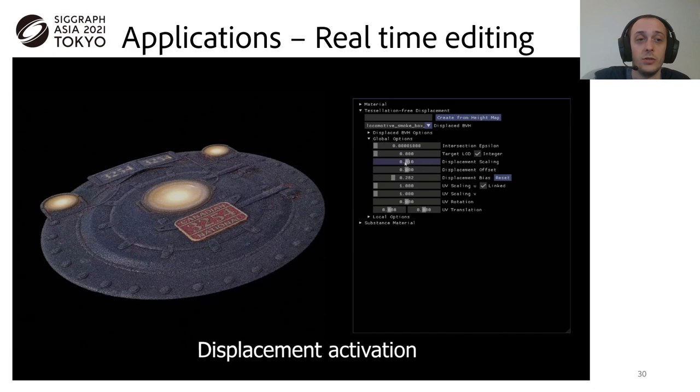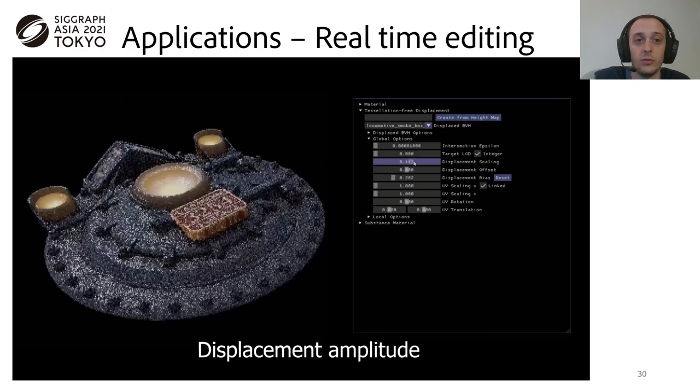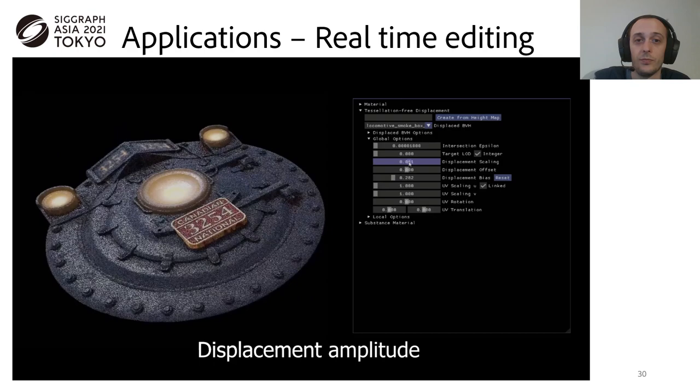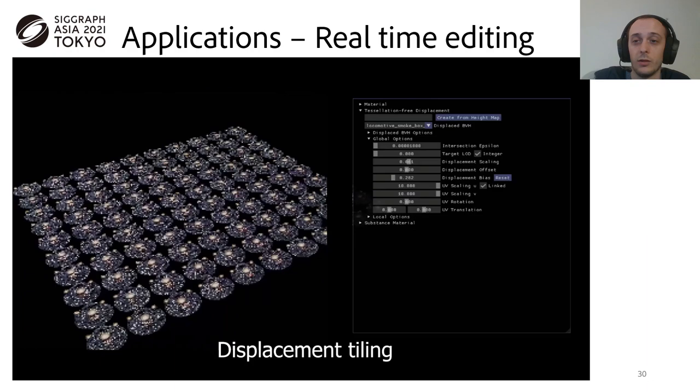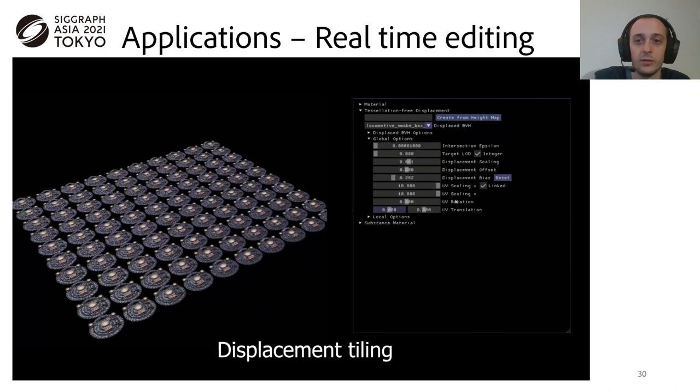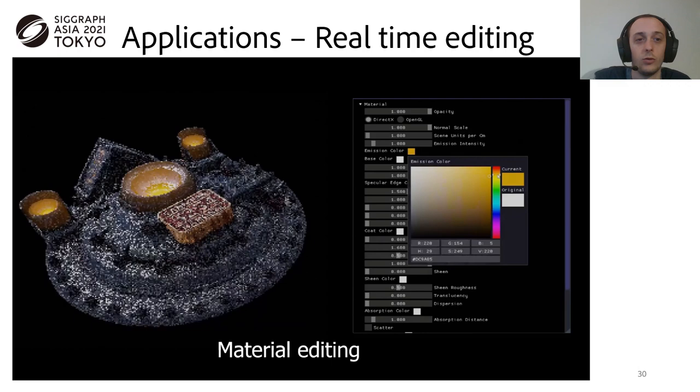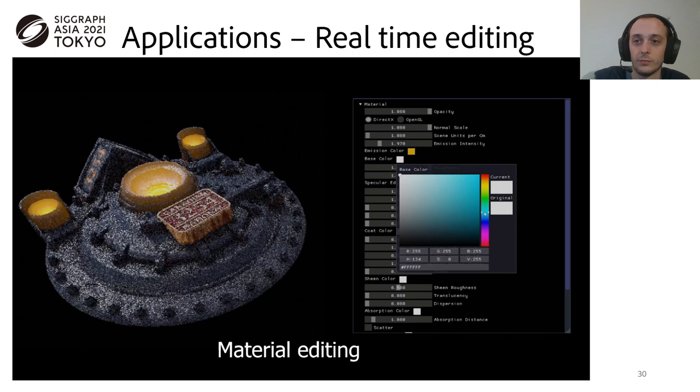We show here results with an interactive modification of the displacement, within a GPU path tracer. For example, modifying the displacement scaling only triggers a BLAS recomputation, which is pretty cheap. We show also here that we are able to modify the amount of tiling with no memory overhead, and quite cheaply as well. Also, by decoupling shading from intersection logic, we can completely modify the material parameters easily.